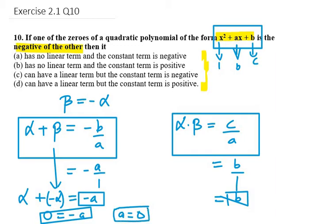Now solving alpha dot beta: alpha dot beta will be alpha times minus alpha. So it will be minus alpha square. Minus alpha square equals b. That means b is less than 0. If it is less than 0, then b must be negative.